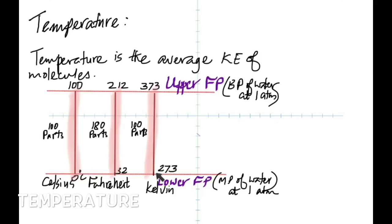On the Kelvin scale, the melting point of ice is 273 and the boiling point of water is 373.